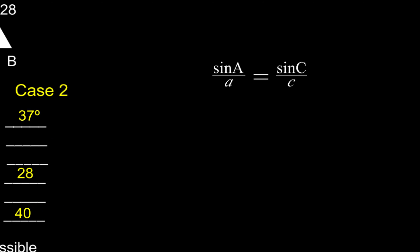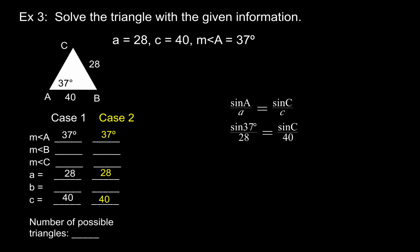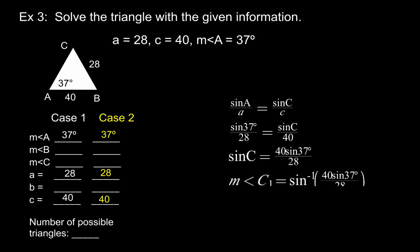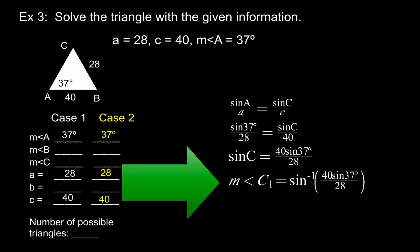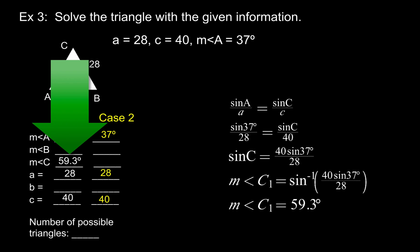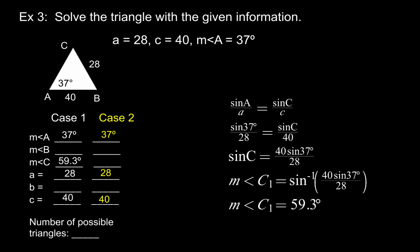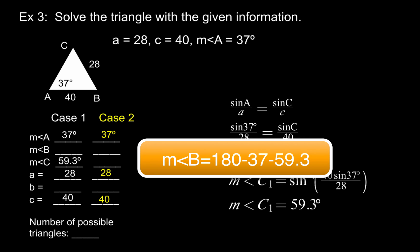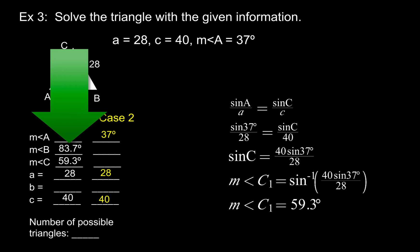We're going to write sine A over a equals sine C over c. Once that's organized, the rest is just solving the proportion — substitute values in, then solve for sine of C. When we do that we're going to use inverse trig, so the measure of angle C equals arc sine of that expression. When you type that into your graphing calculator, you'll come up with a value of about 59.3 degrees for angle C. I'll put that into my chart, and then using the triangle sum theorem — knowing one angle is 37 and the other is 59.3 — I'll figure out angle B by subtracting those two values from 180 degrees, which gives me 83.7 degrees for angle B.